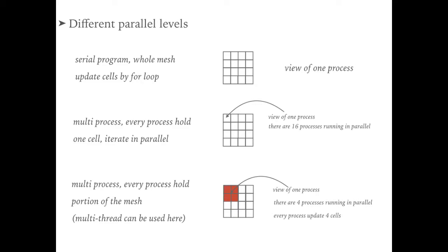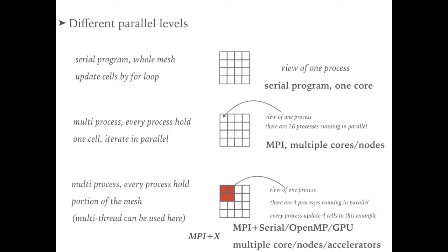The important problem here is how to partition the cells among different processes, namely the computing resources. For the serial program, we can use one CPU core and one process to run it. For the second case, we can use multiple cores and multiple nodes to run multiple processes.